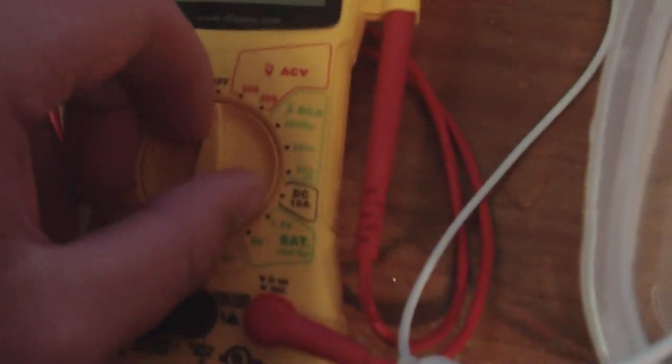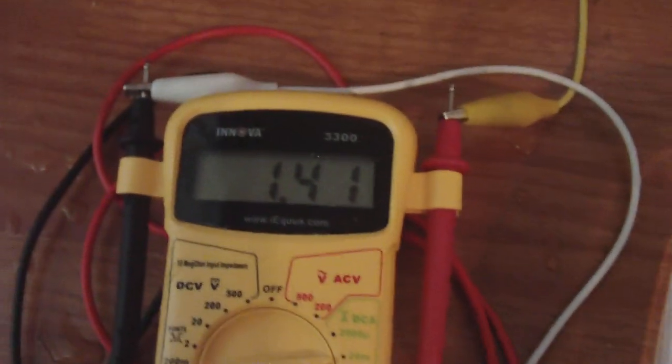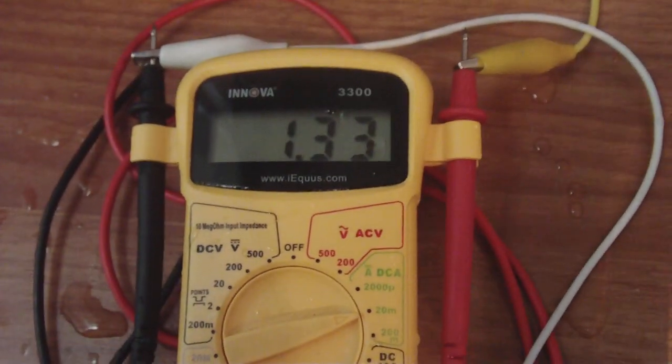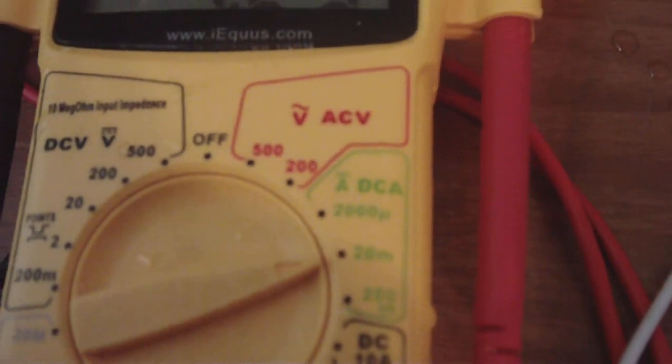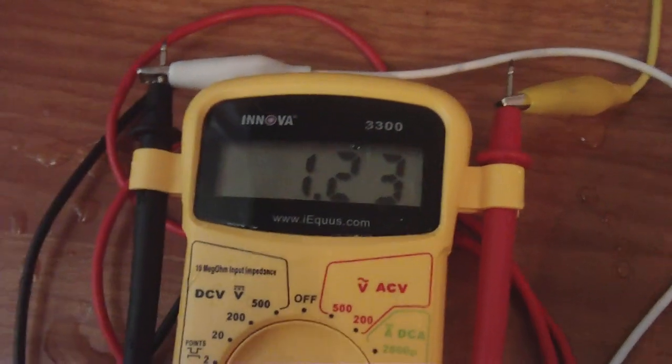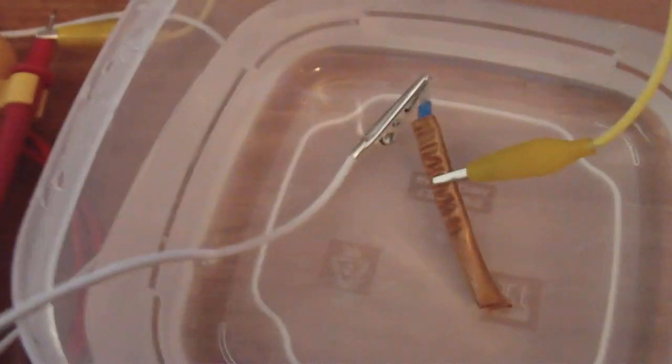Of course, I know some people want to see the amperage, so we're going to put it on the amp scale and you can see we're getting 1.3 milliamps. Yes, milliamps—that's the 20 milliamp scale. Yes, we are getting amperage from something that's completely underwater as you can see.